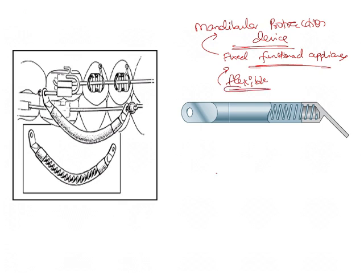It is flexible because it uses coil springs. As you can see in the image, the inner workings of the Jasper Jumper consist of coil springs. This coil spring is covered by a plastic covering for two reasons: first, it is an open coil spring, so the covering is given to protect the soft tissue from impingement.